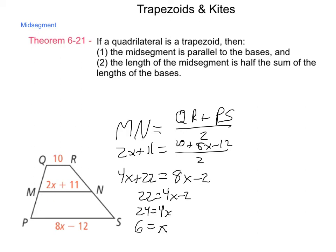Substituting back in to find the values for MN and PS: 2 times 6 is 12, plus 11 is 23. Then 8 times 6 is 48, minus 12 is 36. So we were able to find the length of each piece, and sure enough, 10 plus 36 is 46, divided by 2 is 23 — confirming our answer.